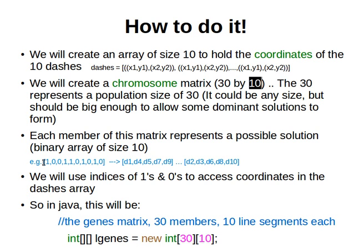One possible solution might look like this. The ones will represent one array — one possible dash line — and the zeros will represent another possible dash line. These use the indices to access the actual coordinates in the dashes array. If we group the ones together we end up with dash 1, dash 4, dash 5, dash 7, dash 9. Likewise for the zeros — that's the other group forming the other line.